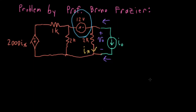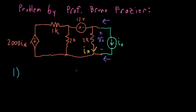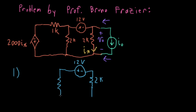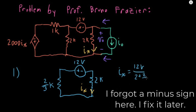First, let's look at that 12-volt source. I'm going to deactivate the current source by opening it up, and I'm going to deactivate the controlled voltage source by shorting it out — I'll call that case number one. So I'll have my 12-volt source, 2K, and then 1K in parallel with 2K. 2 times 1 is 2, over 2 plus 1 which is 3, so that's two-thirds K. To figure out the contribution to IX from this 12-volt source, I can use Ohm's law: IX equals 12 volts divided by 2 plus two-thirds K.